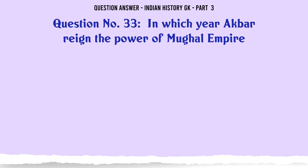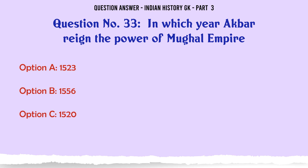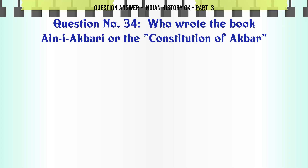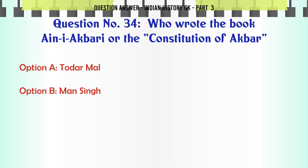In which year did Akbar reign over the Mughal Empire? A. 1523, B. 1556, C. 1520, D. 1495. The correct answer is 1556.